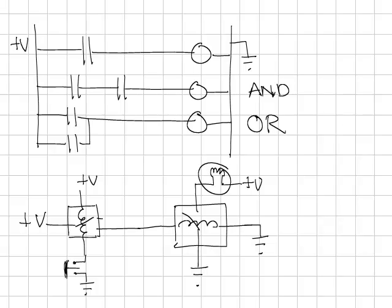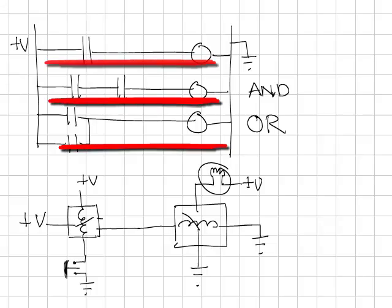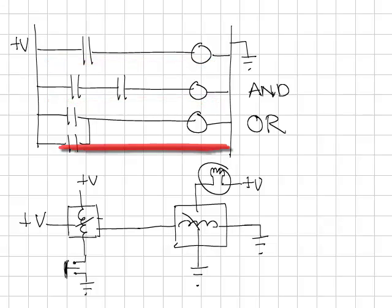A word of caution about ladder logic, it's not sequential. So in this diagram here, it's not this happens, then this happens, then this happens. They all happen simultaneously. It represents an electric circuit.